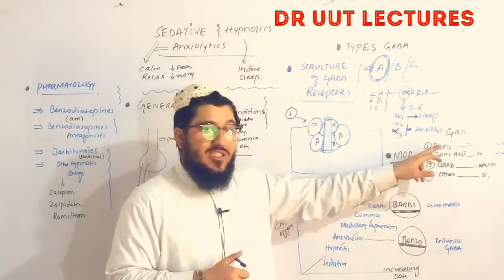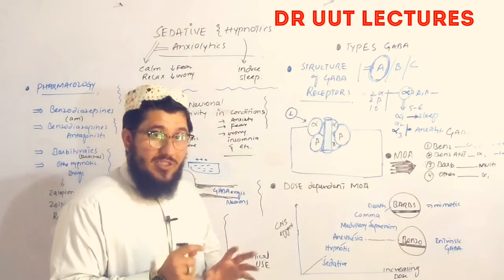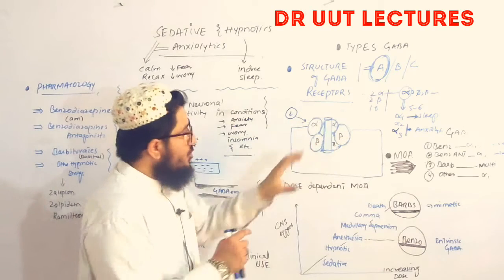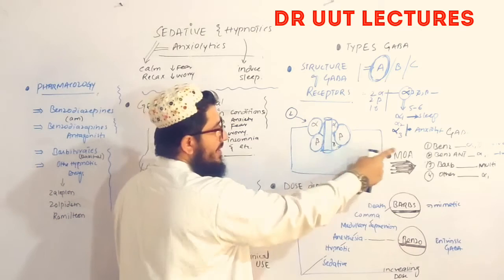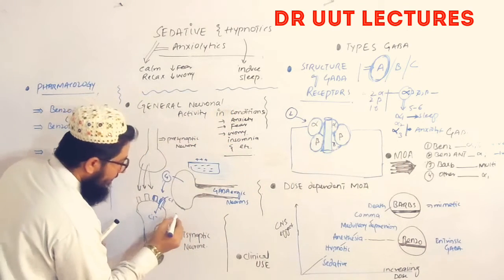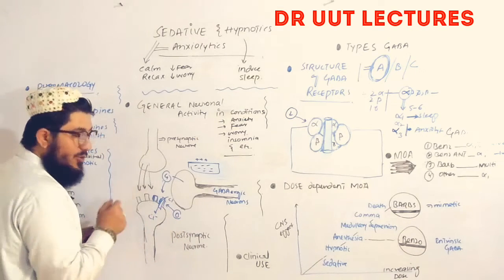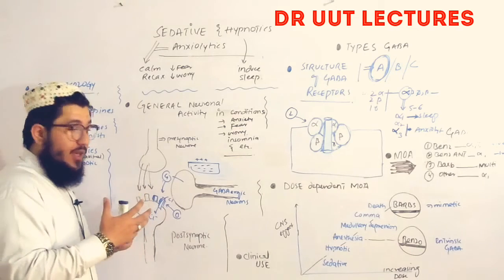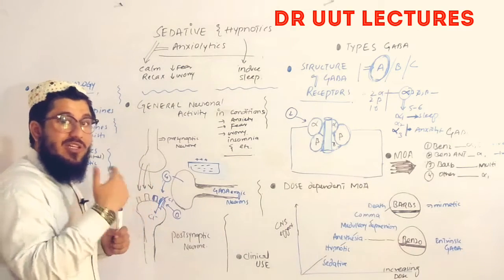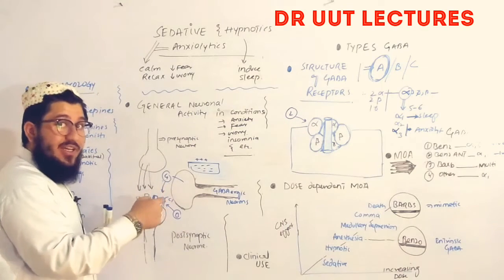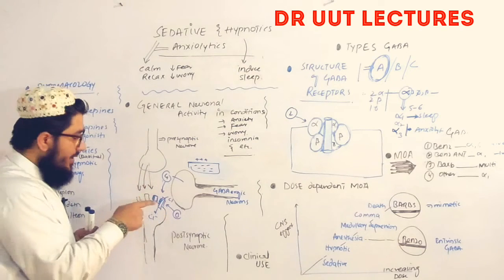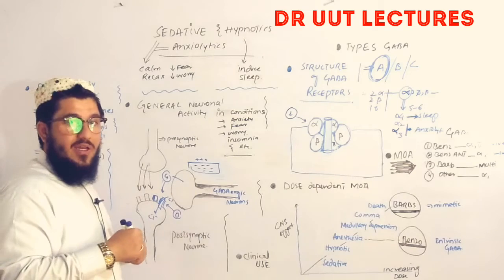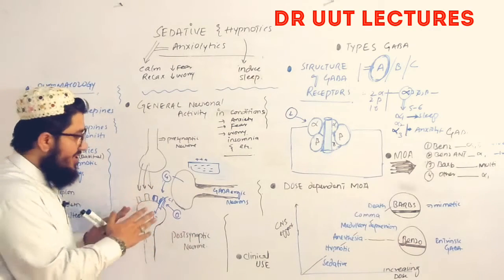Now the mechanism of action of benzodiazepines. Benzodiazepines bind to the alpha and gamma subunits of the GABA-A receptor. When they bind, they increase the receptor's affinity — that is, the ability of the GABA-A receptor to bind to the GABA neurotransmitter. As a result, more GABA binds, the ion channel opens, chloride ions move into the cell, the inside becomes more negative, and hyperpolarization occurs — producing an inhibitory effect.